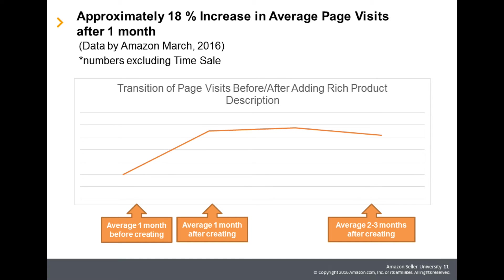This graph shows the transition of average page visit numbers of products implementing Rich Product Description. One month after implementation, page visits increased 18%, and increasing page visits are maintained thereafter.